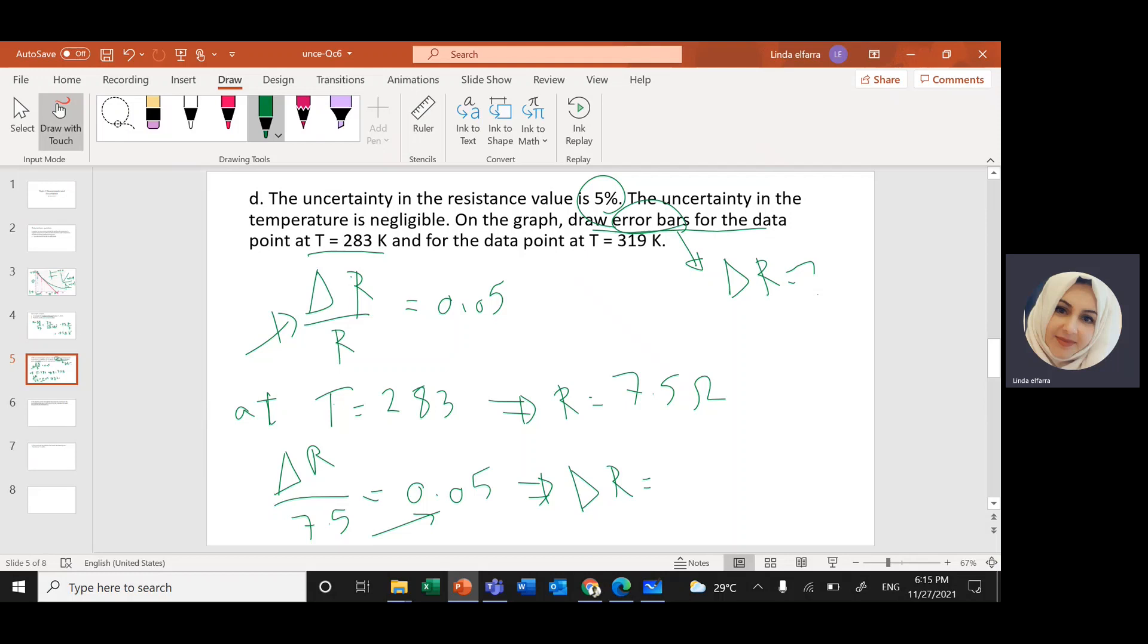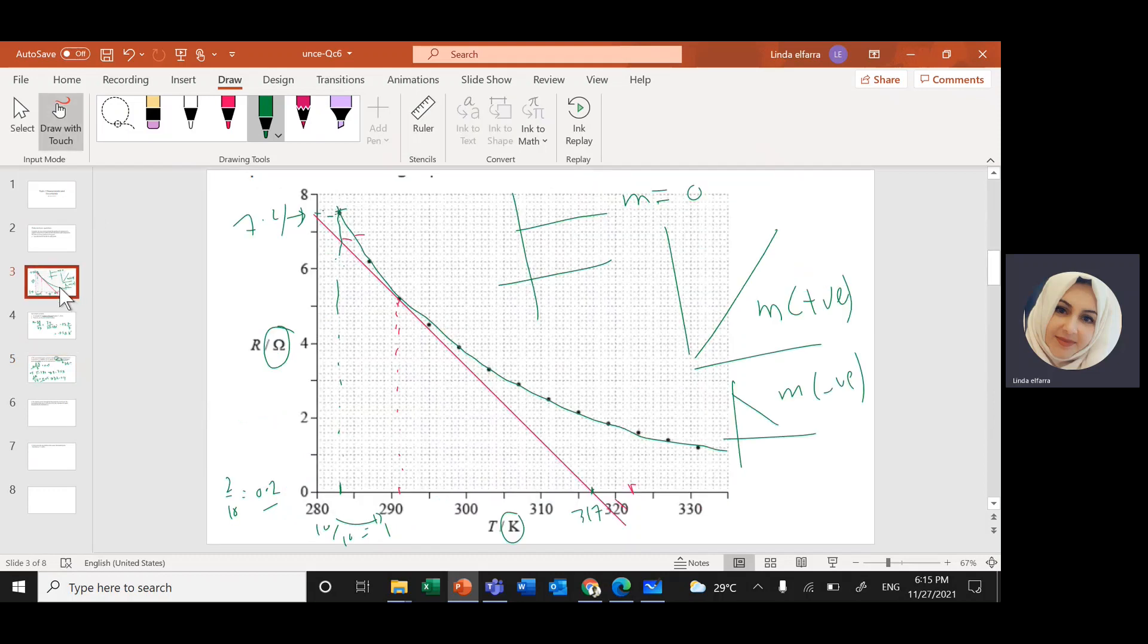So delta R, if I multiply 7.5 times 0.05 will give me around 0.375, which is around 0.4. If we go back to the graph, that means I can draw, which said each square is 0.2. So 0.4, it will be two squares, two squares up. So at 283, which means this point here, this point,